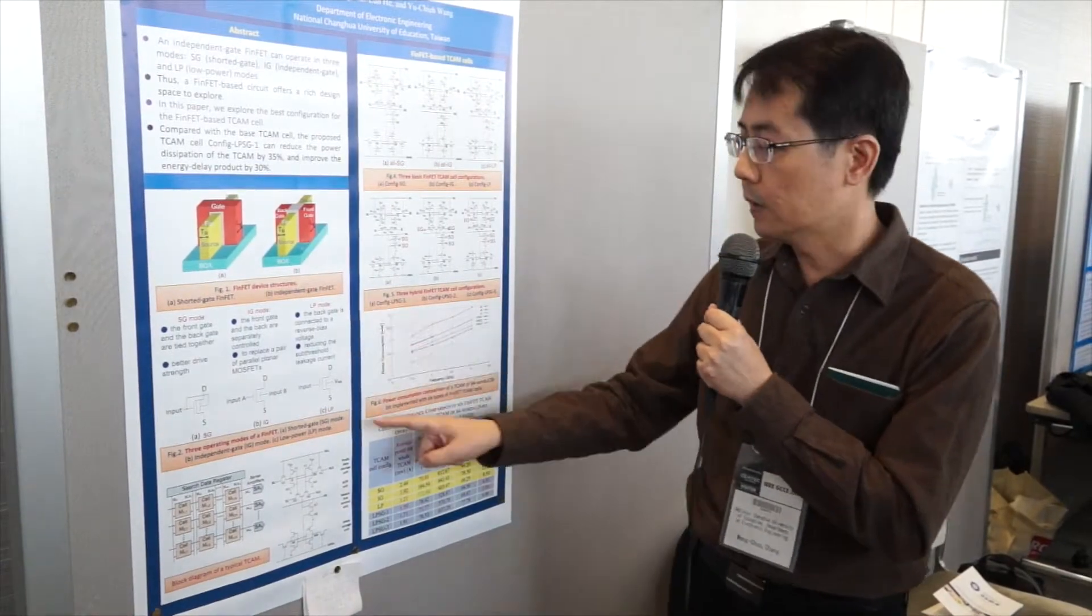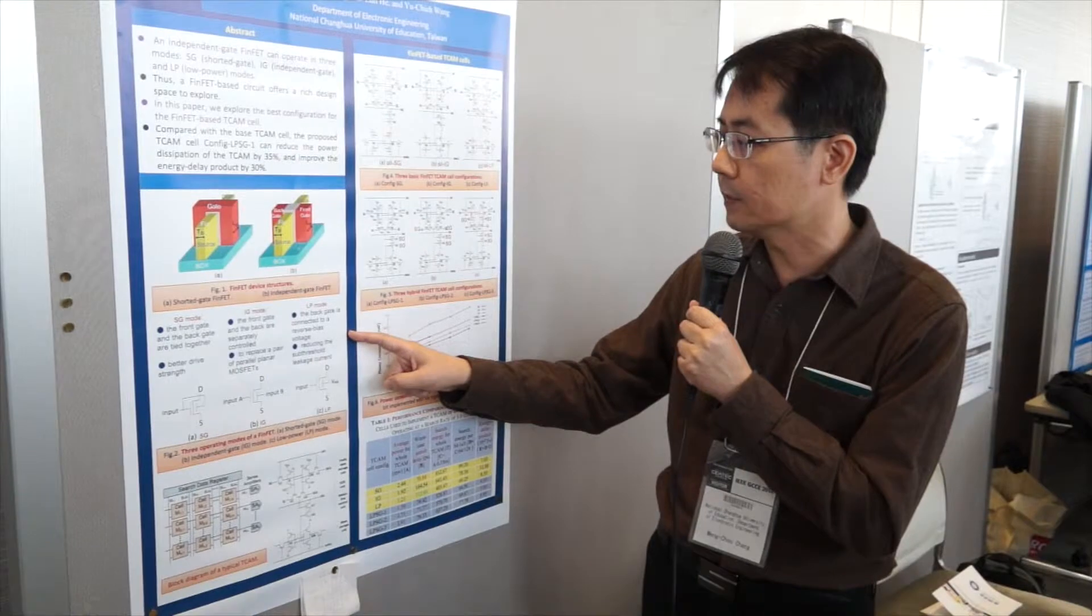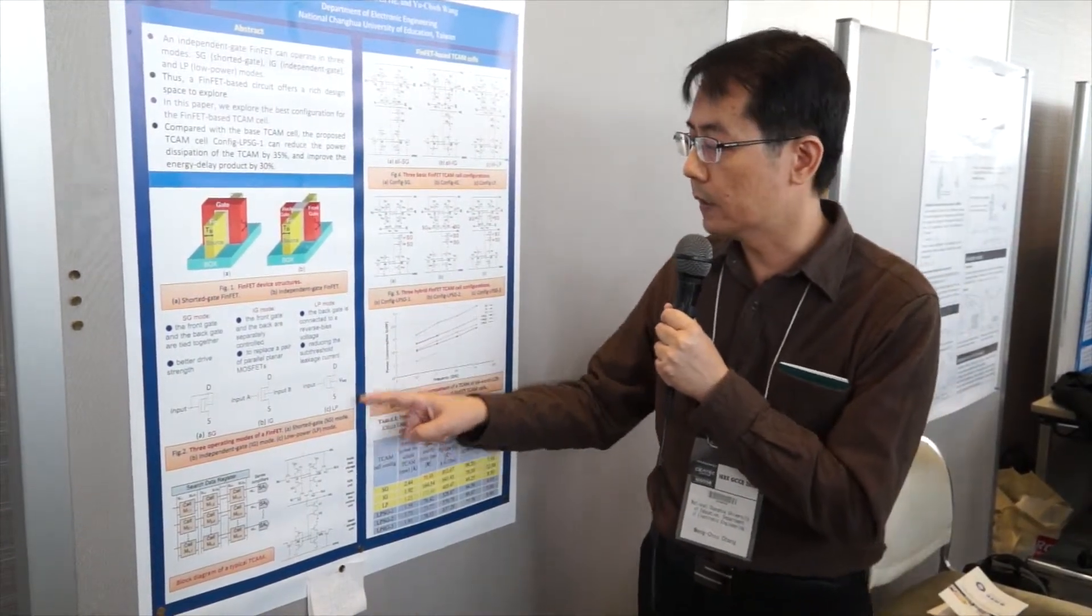In the low power mode, the back gate is connected to a reverse bias voltage. So when the front gate is turned on, the device has less leakage current.